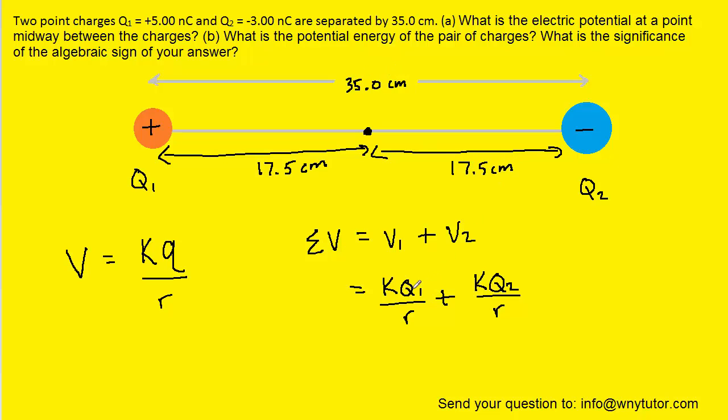And since the distance is the same, we can actually factor out a K as well as the R. So when we do that, we would have K over R multiplied by Q1 plus Q2.